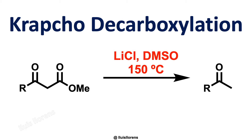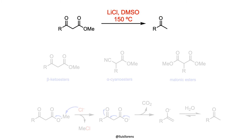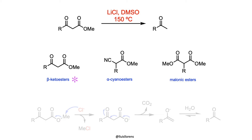In this video I'm going to talk about the Krapcho decarboxylation. The Krapcho decarboxylation is the chemical transformation that allows the hydrolysis and subsequent decarboxylation of esters bearing electron-withdrawing groups. Beta-keto esters, alpha-cyano esters, or malonic esters are good examples of esters containing an electron-withdrawing group in the beta position, and therefore may undergo Krapcho decarboxylation.